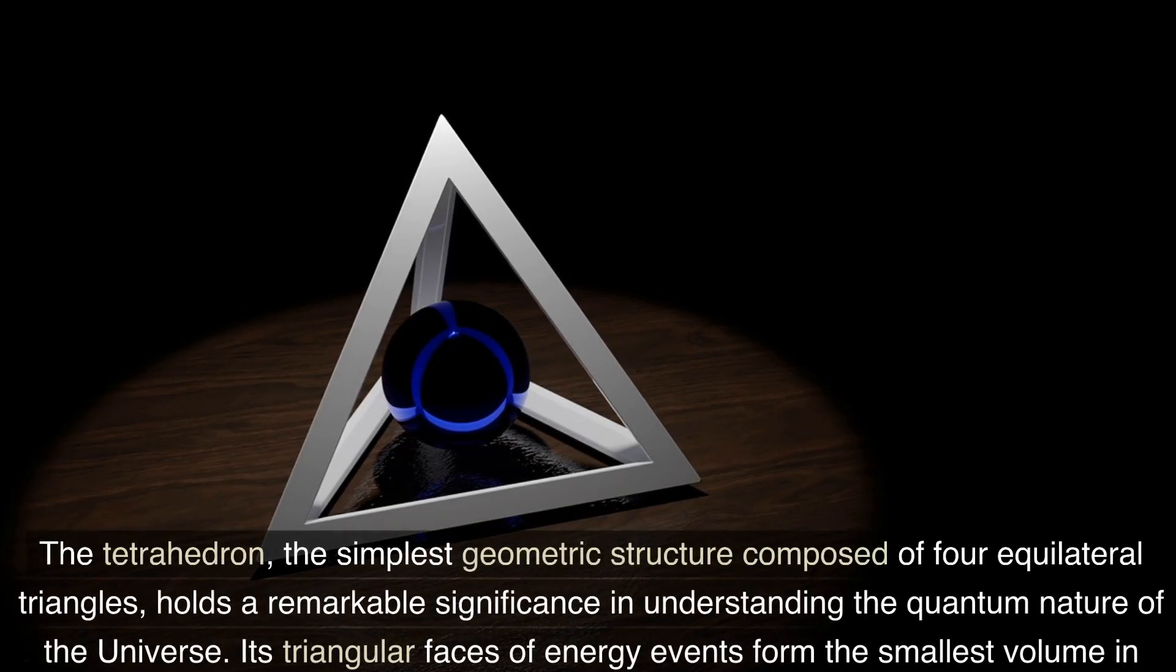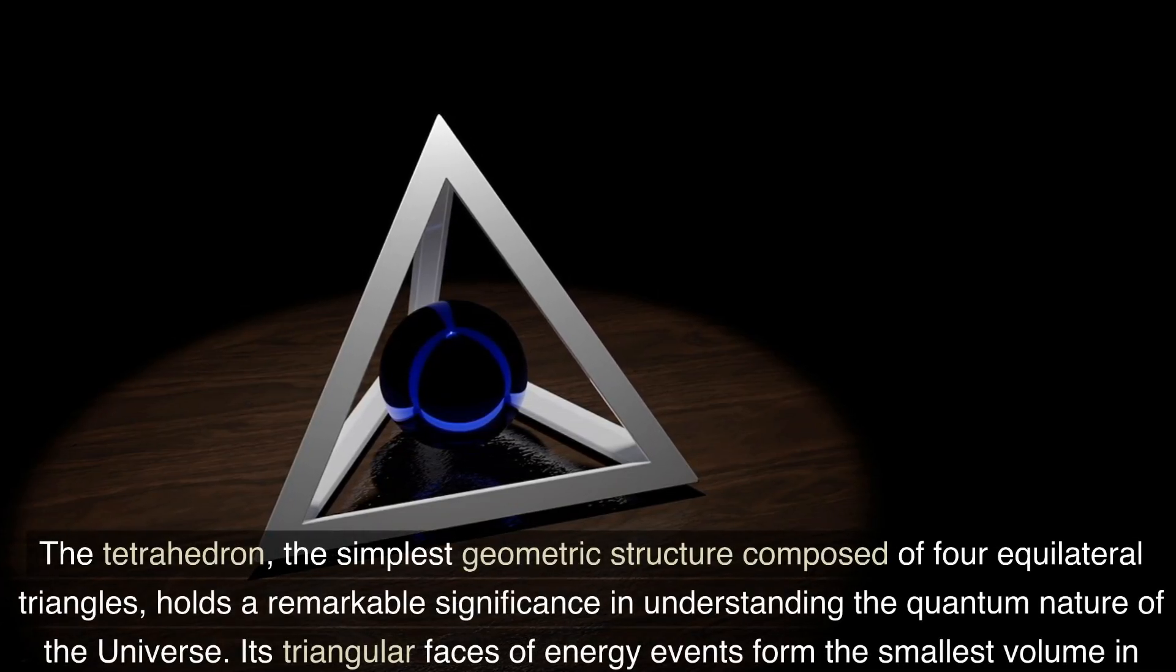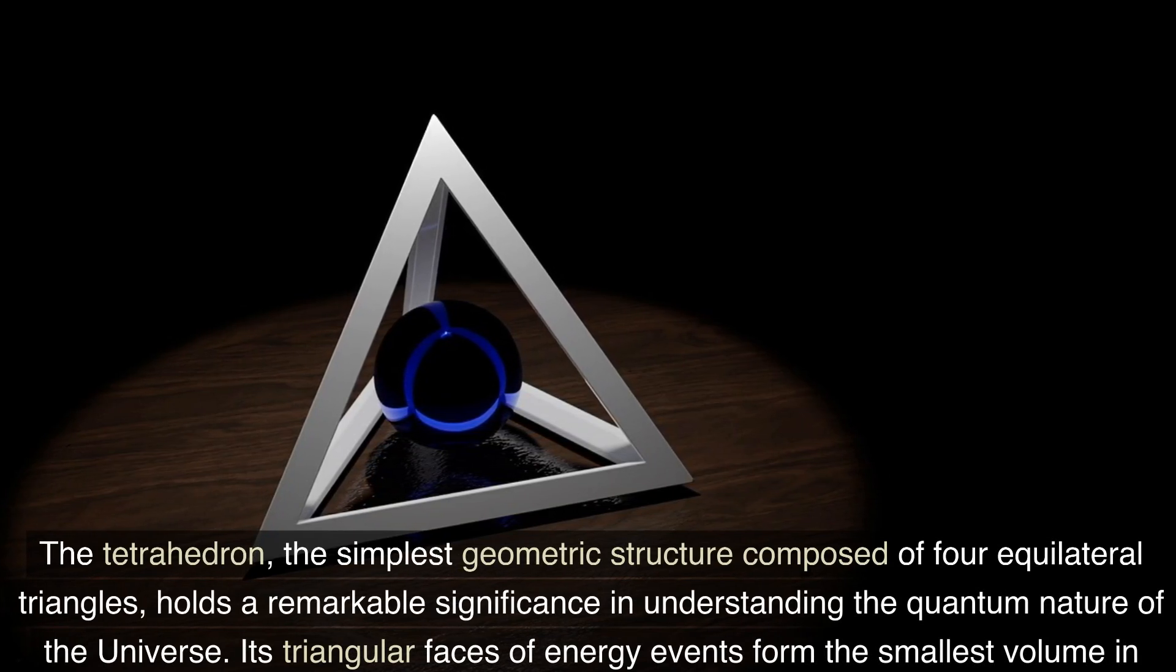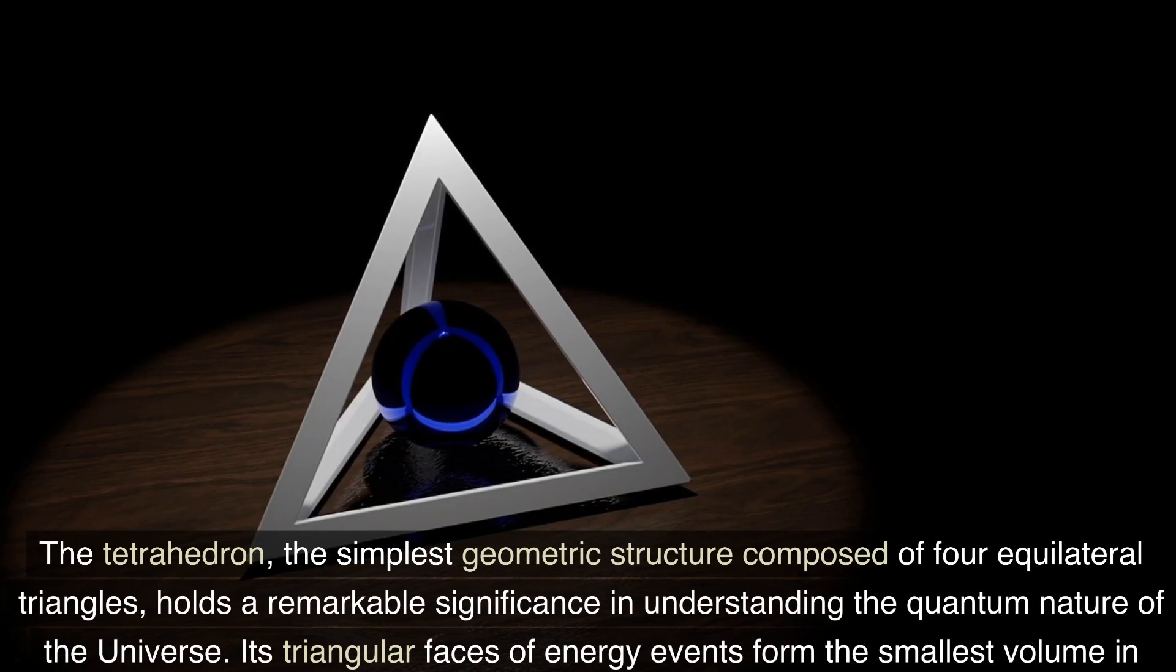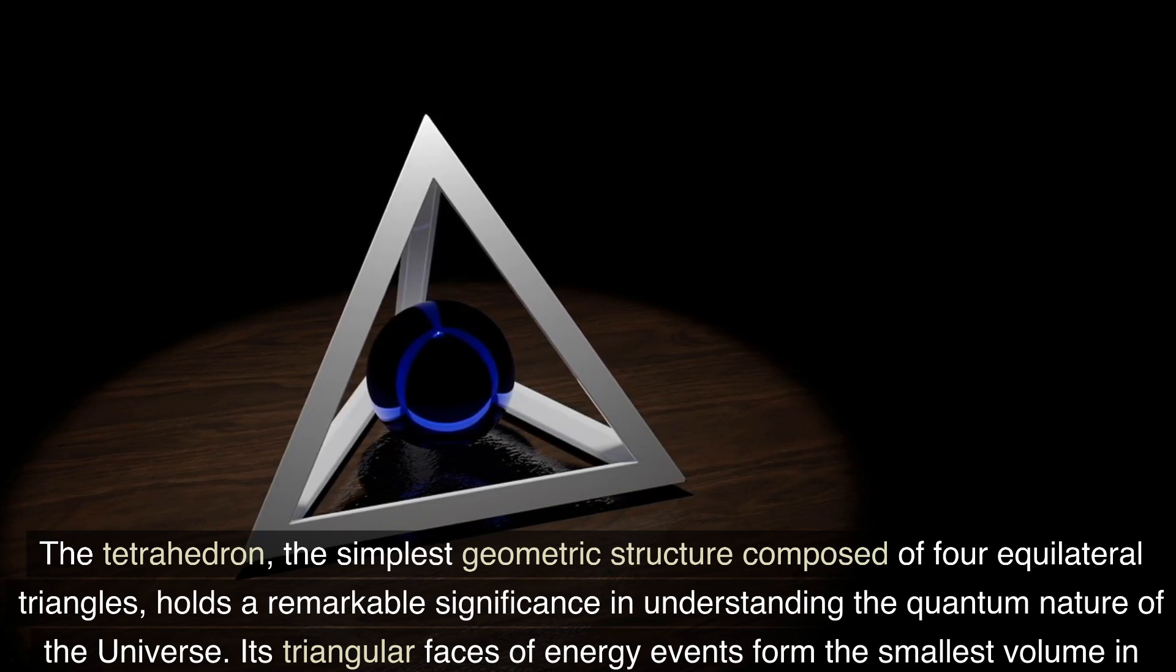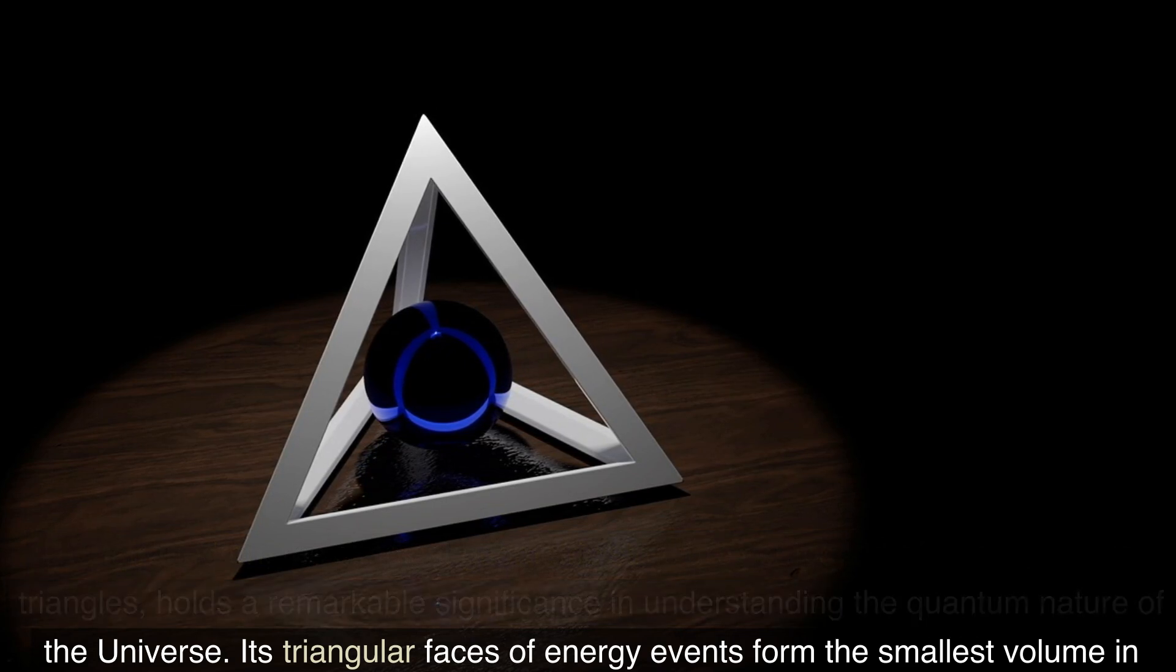The tetrahedron, the simplest geometric structure composed of four equilateral triangles, holds remarkable significance in understanding the quantum nature of the universe. Its triangular faces of energy events form the smallest volume in the universe and govern the interactions and dynamics within the quantum realm.